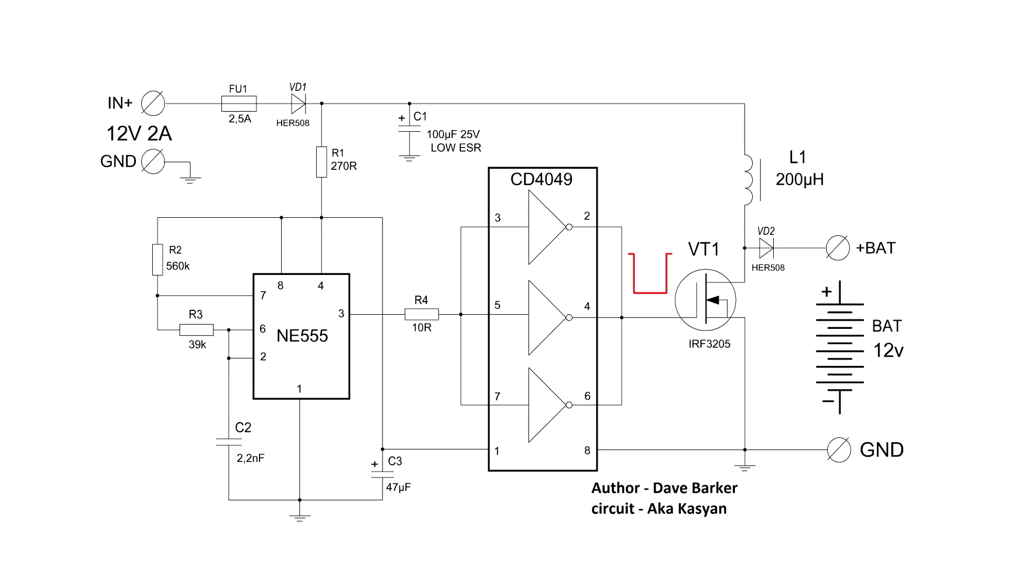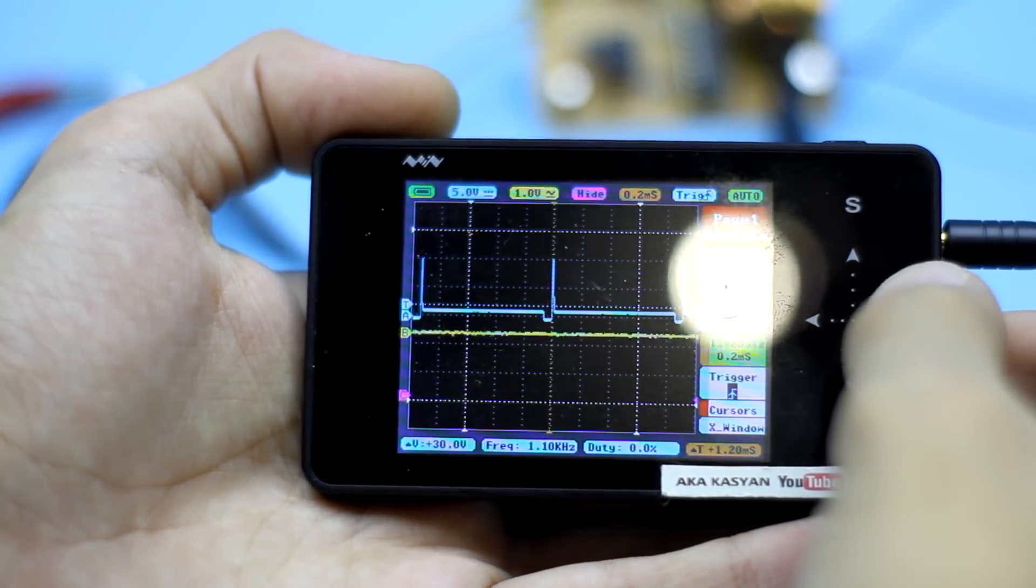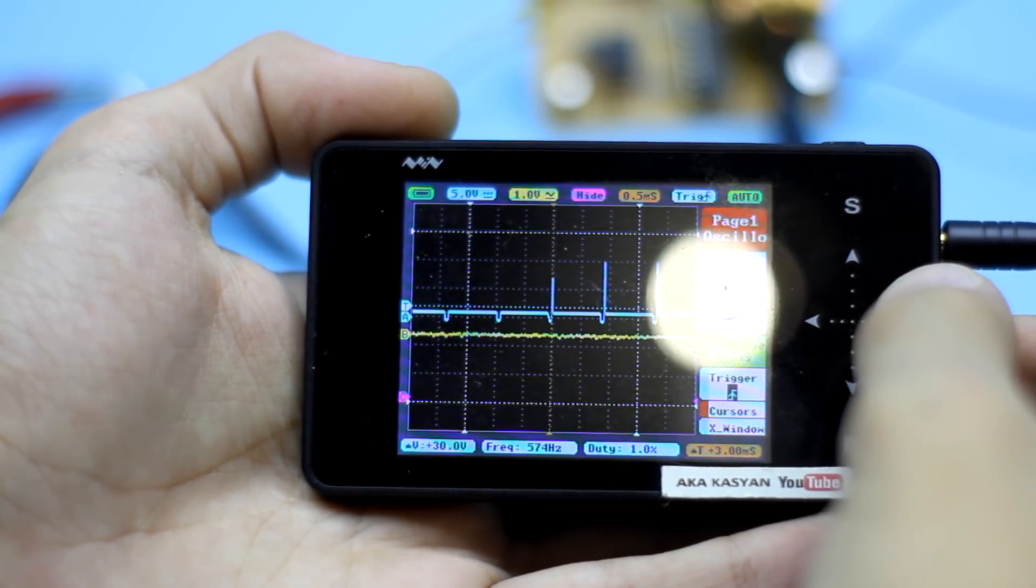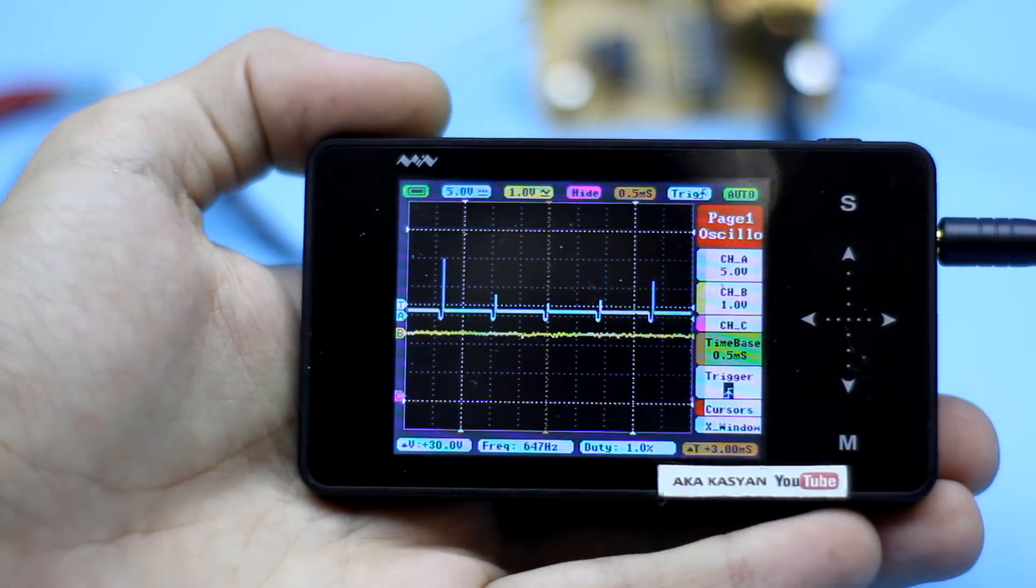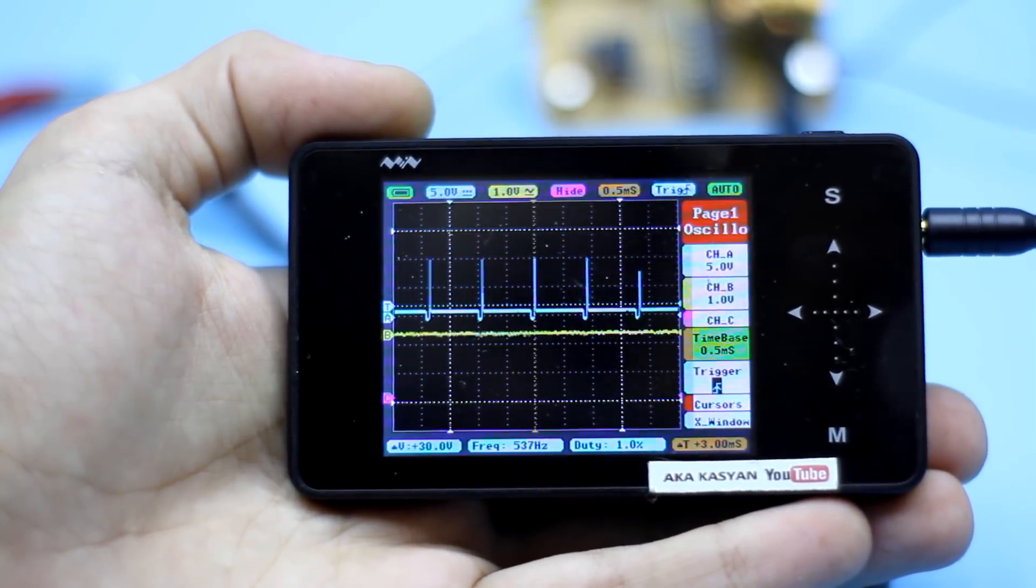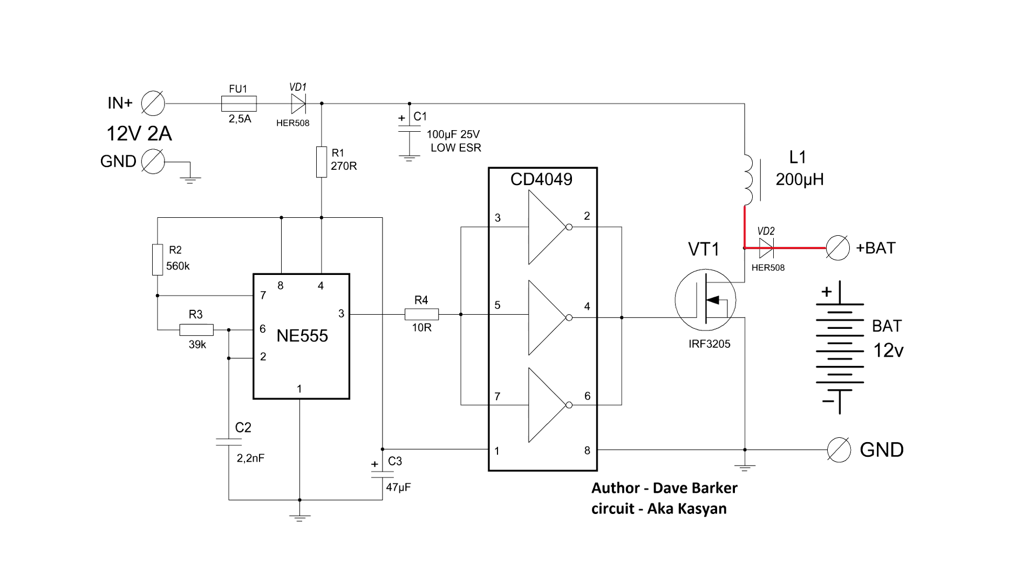Due to the phenomenon of self-induction, which is inherent for any inductive loads, the throttle gives an accumulated energy. This is a short-term surge of voltage with high amplitude. And the self-induction voltage is several times higher than the supply voltage. This voltage impulse is rectified and fed to the battery.